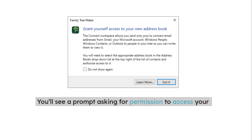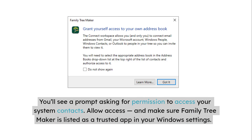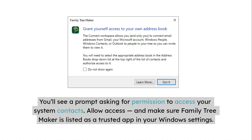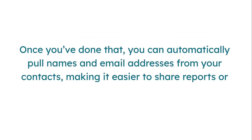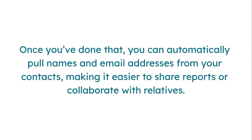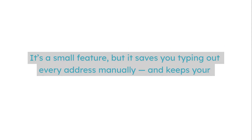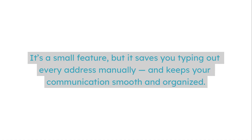If you're using Windows, here's what to do. Open Family Tree Maker and go to Edit > Preferences > Contacts. You'll see a prompt asking for permission to access your system contacts. Allow access, and make sure Family Tree Maker is listed as a trusted app in your Windows settings. Once done, you can automatically pull names and email addresses from your contacts, making it easier to share reports or collaborate with relatives. It's a small feature, but it saves you typing out every address manually and keeps your communication smooth and organized.